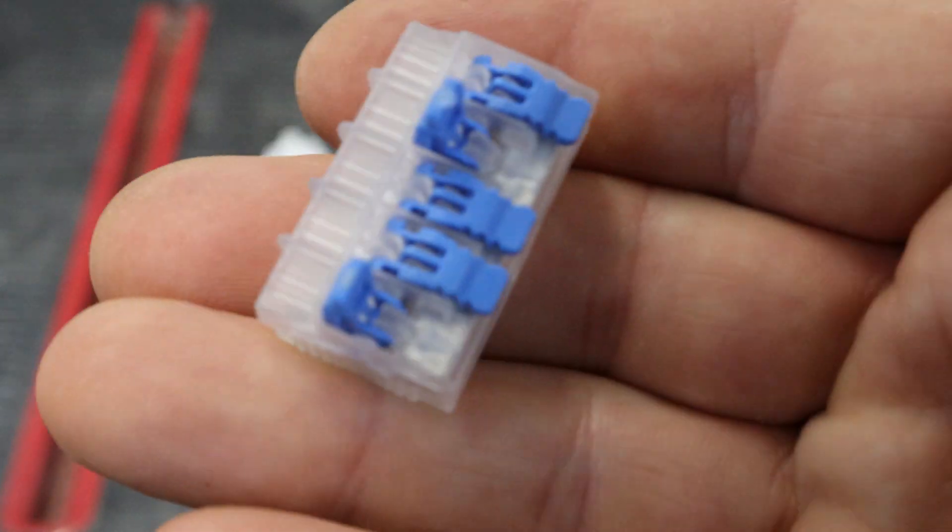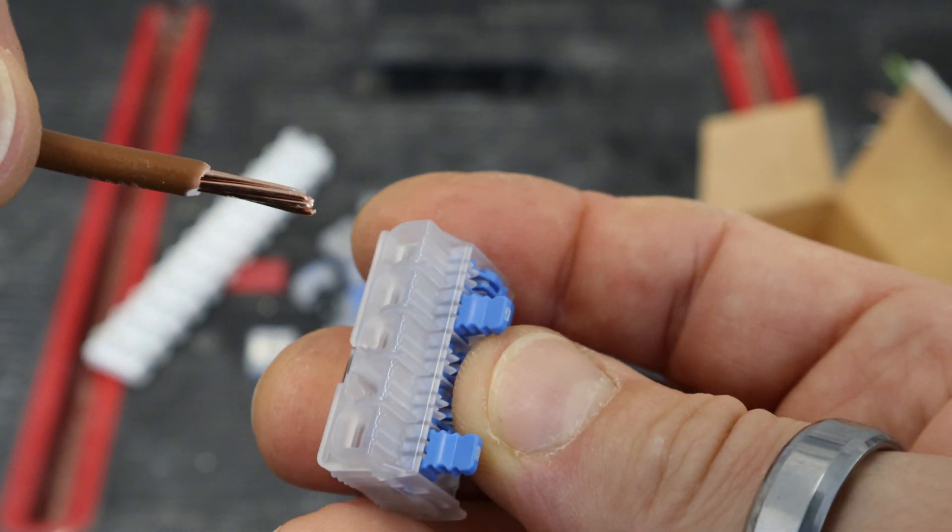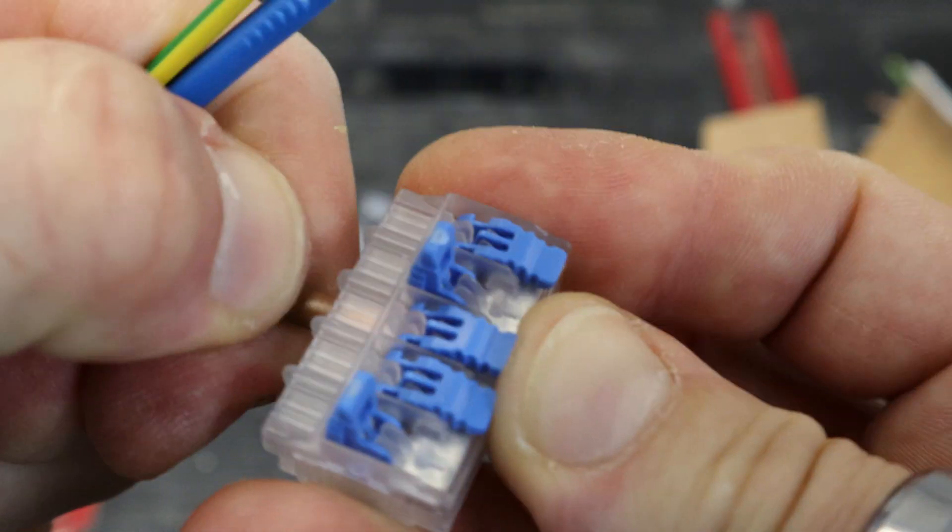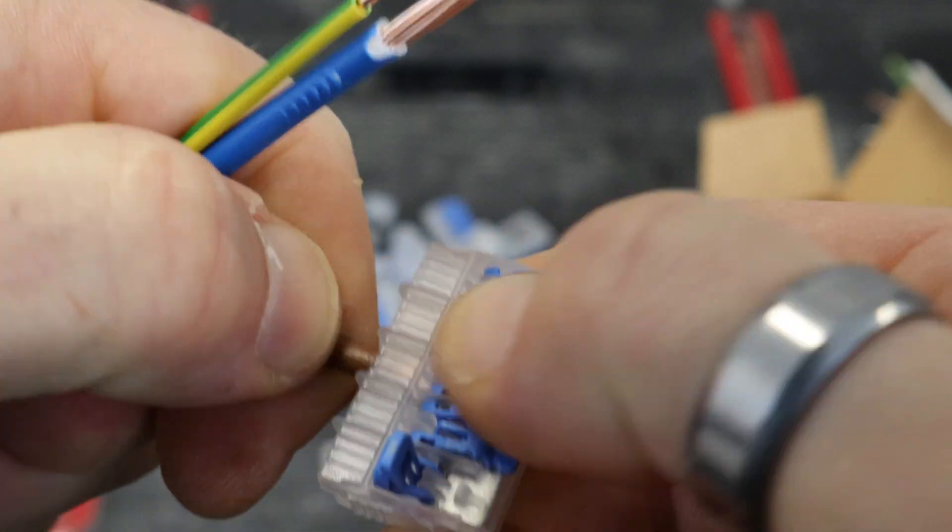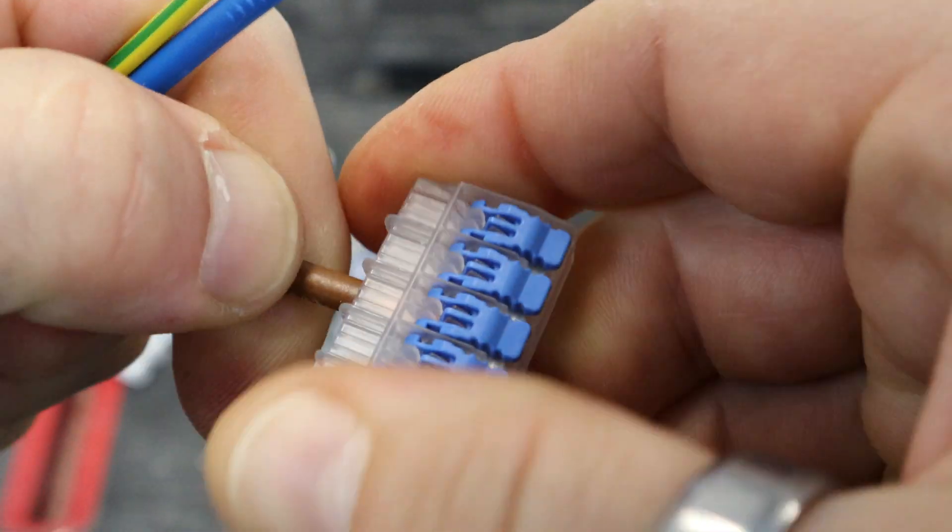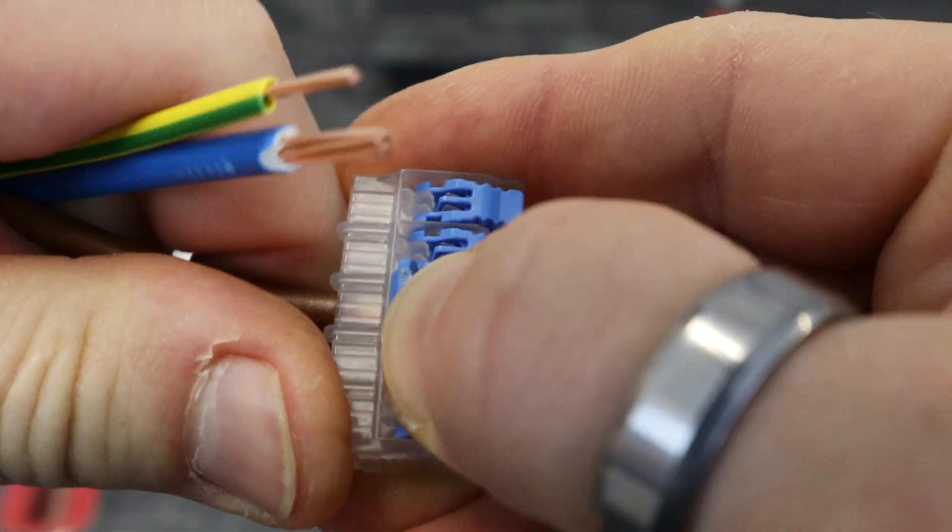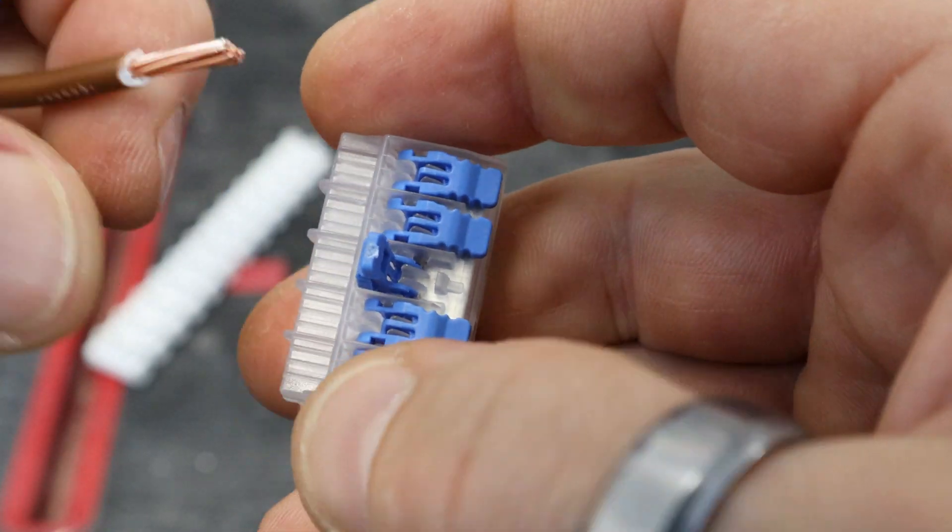Taking a 4mm cable, do the same thing again. It will just push straight in, a bit tougher with the 4mm, again completely locked into place. Again just lift the lever, a bit tougher with the 4mm but it does just come out.